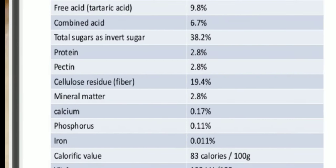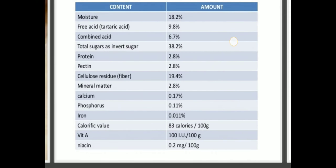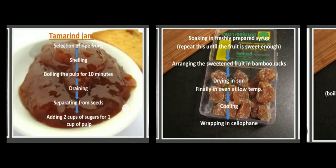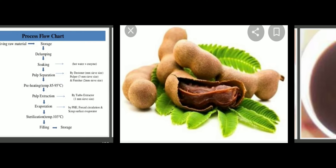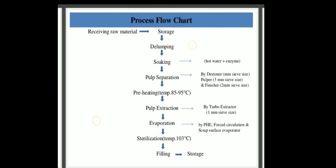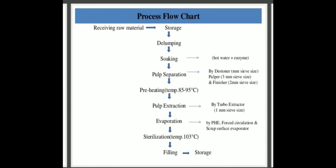Mineral matter is 2.8%, containing calcium, phosphorus, and iron. It provides 83 calories per 100 grams, and contains vitamin A and niacin. Now for processing of tamarind pulp: raw material is received in the form of slabs, bars, or balls.